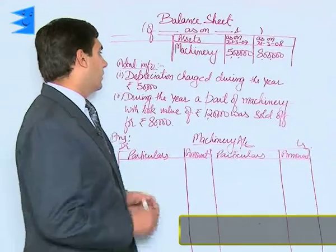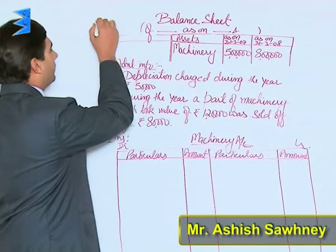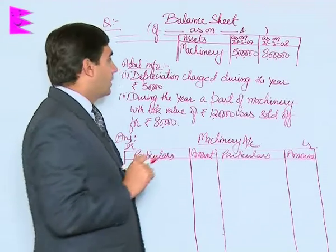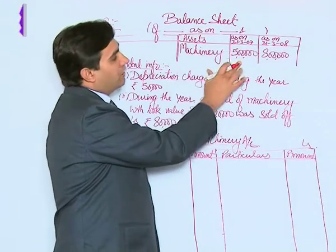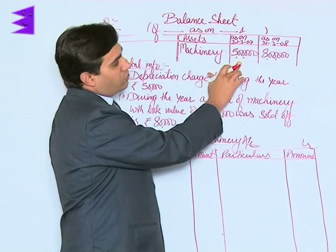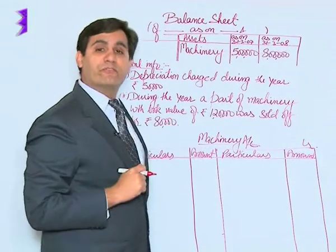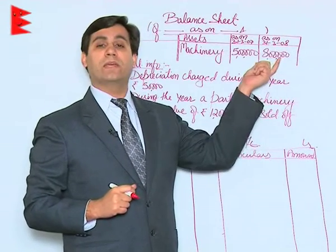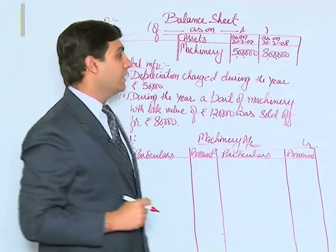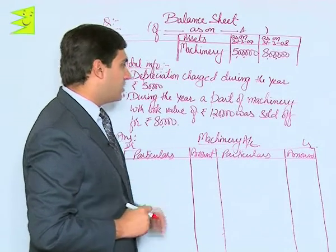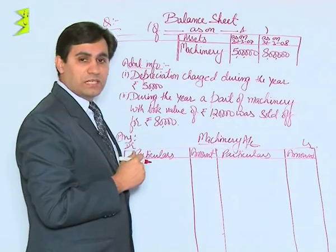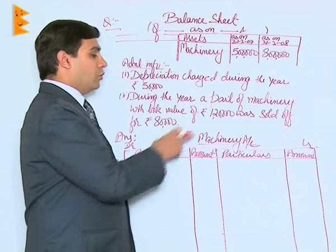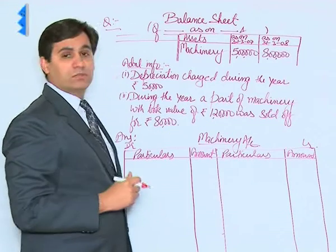From the following question, we are required to calculate the amount of cash flow from investing activities. Machinery as on 31st March 2007 appeared at rupees 5 lakh, whereas as on 31st March 2008 the value appearing in the balance sheet is rupees 8 lakh. During the year the depreciation charged is rupees 50,000, as given in the additional information, and a particular part of machinery whose book value was rupees 1 lakh 20,000 was sold off.